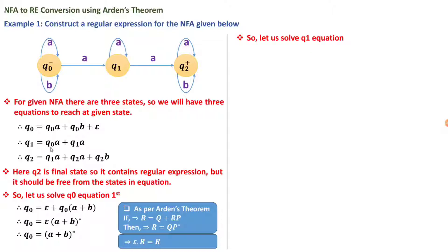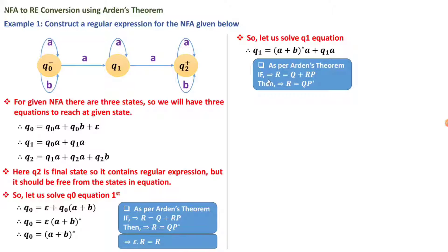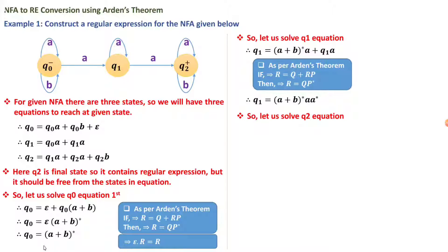Substituting q0 = (a+b)* into q1: q1 = (a+b)*·a + q1·a. Applying Arden's theorem again with R = q1, Q = (a+b)*·a, P = a, we get q1 = (a+b)*·a·a* = (a+b)*·a·a*, which is the regular expression for q1.